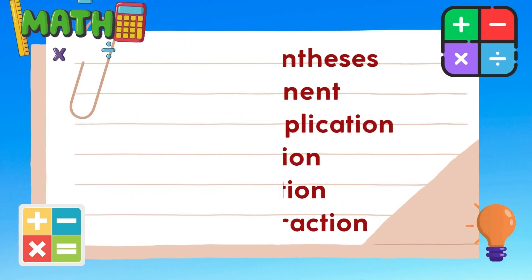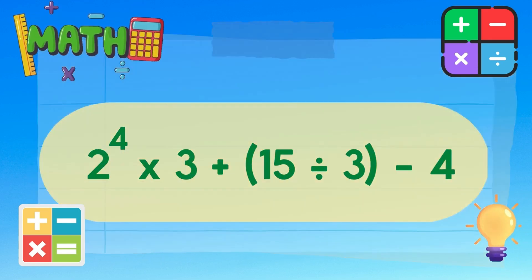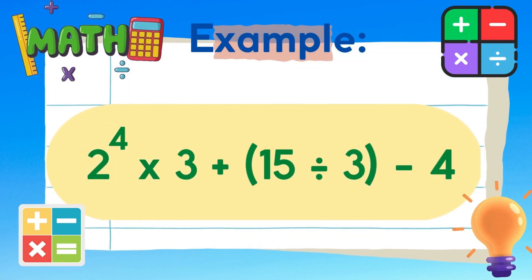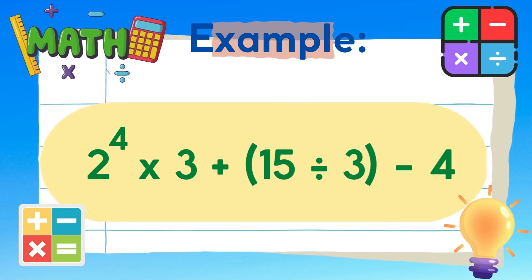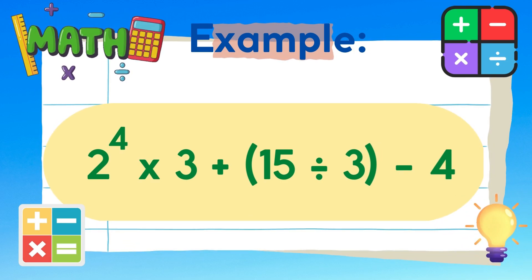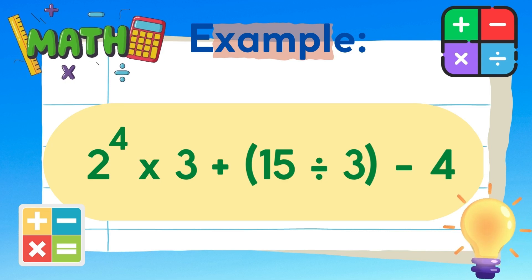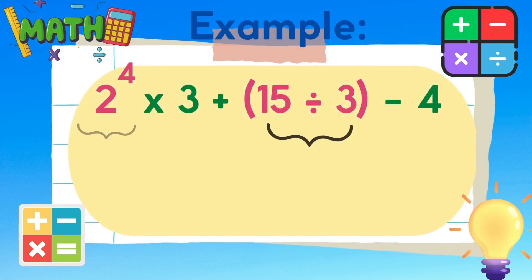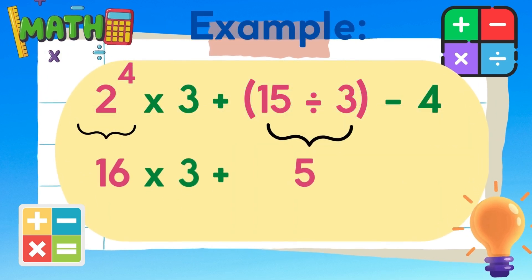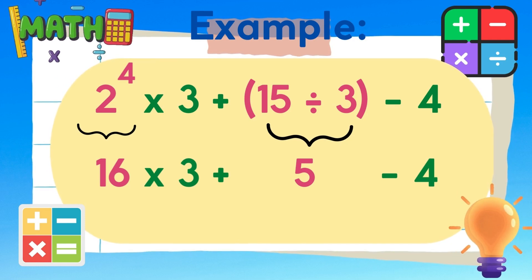Let's have another example: 2 raised to the 4th power, times 3, plus the quantity of 15 divided by 3, minus 4. In this example, we need to simplify first the number raised to the exponent and the operation indicated inside the parenthesis. So, 2 raised to the 4th means 2 times 2 times 2 times 2, which is equal to 16. Next, 15 divided by 3 is equal to 5.